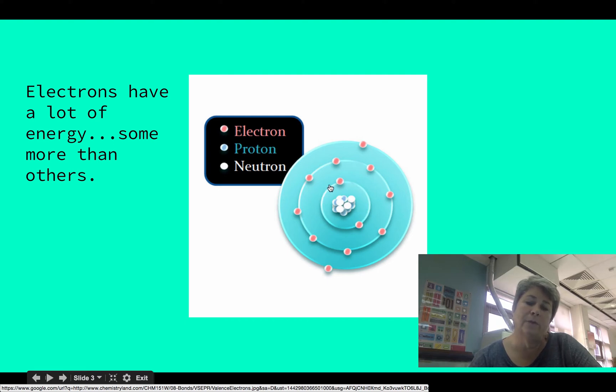If you look here, this first level has two electrons. This next one has one, two, three, four, five, six, seven, eight. And then this next one has two.